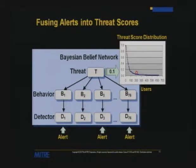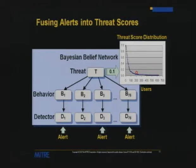There was some overlap in how we built the network — not strict independence between nodes as Bayesian network theory requires. There was some dependence, but we know Bayesian networks can be somewhat tolerant of that assumption being relaxed.